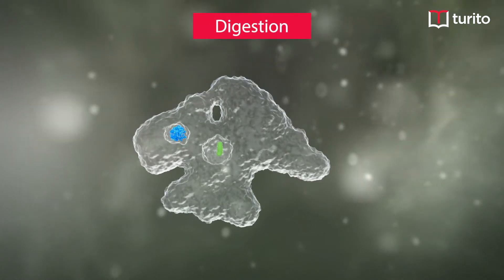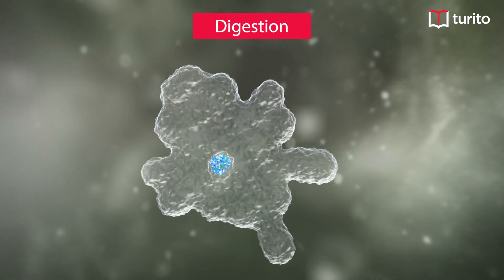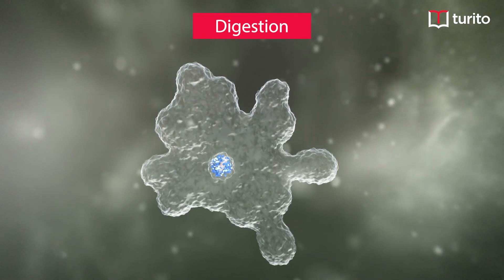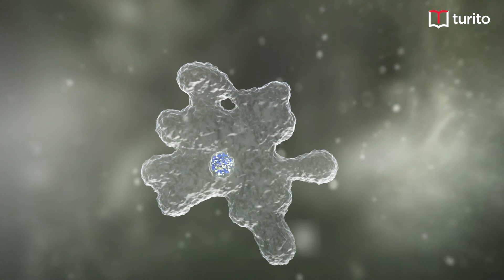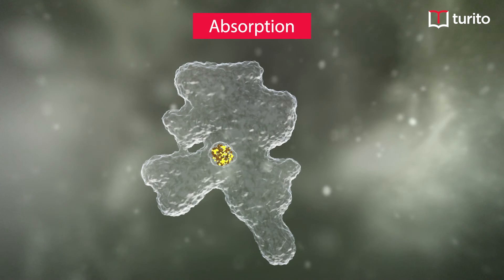Once this is done, we see that there is digestion of the food substance inside amoeba. There's breakdown of this food substance into smaller absorbable forms, and then there is absorption of the nutrients.